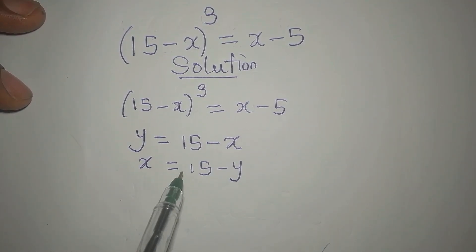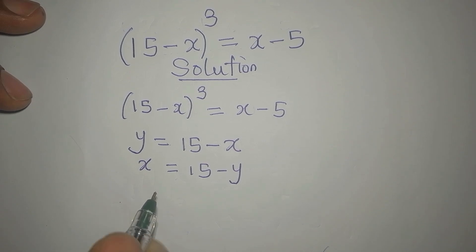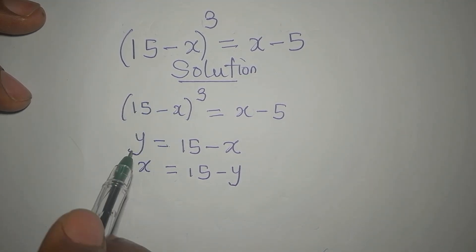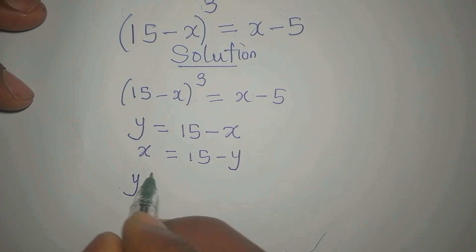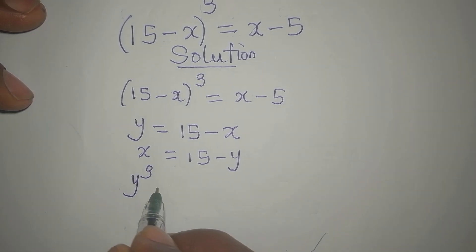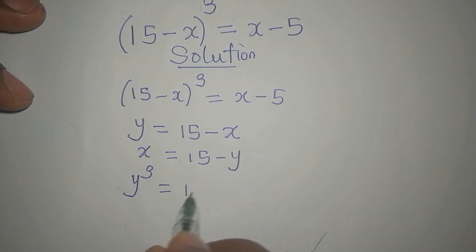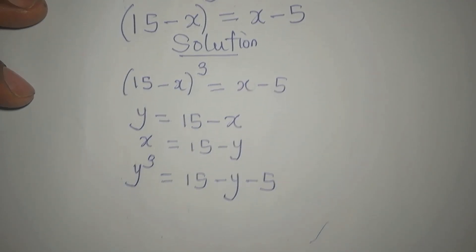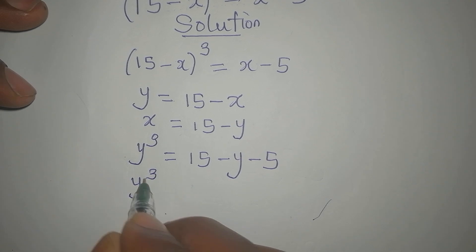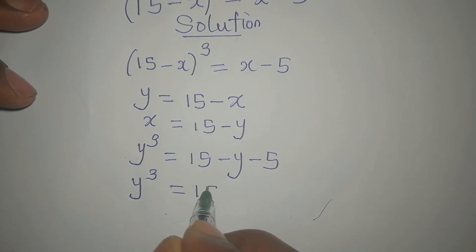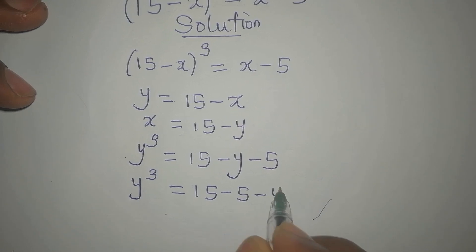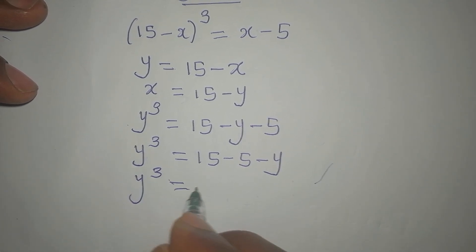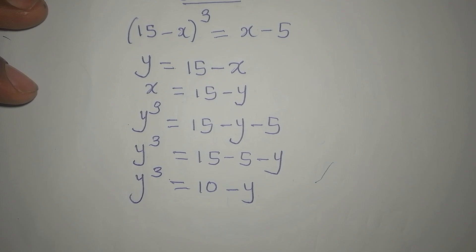Now I'm going to replace this X with 15 minus Y. The whole of the left side becomes Y to the power of 3, and on the right we have 15 minus Y minus 5. So Y to the power of 3 equals 10 minus Y.